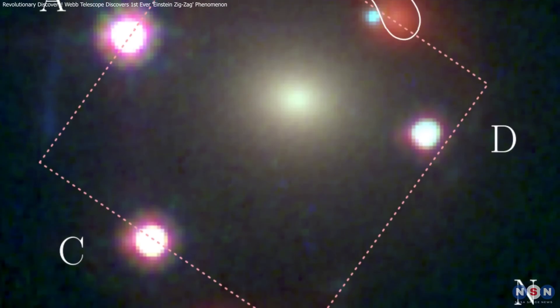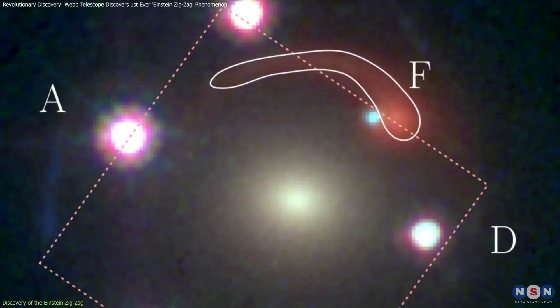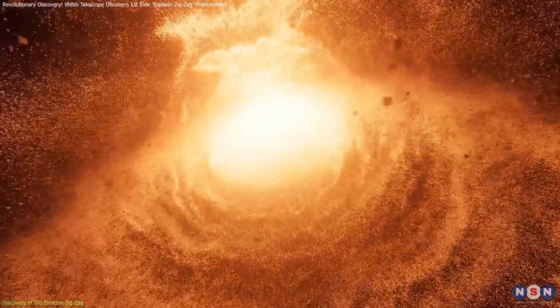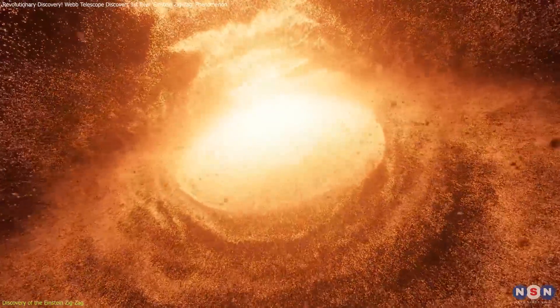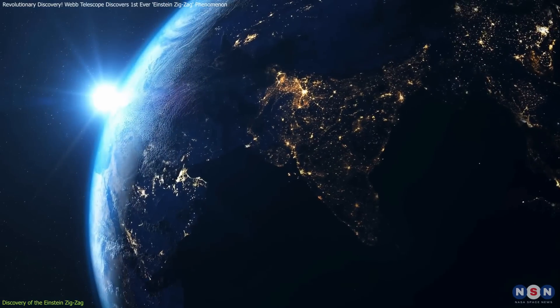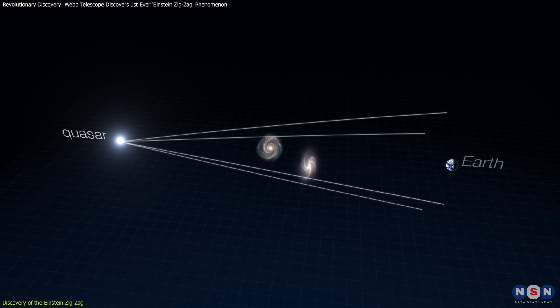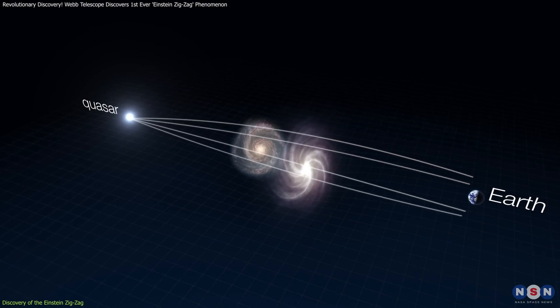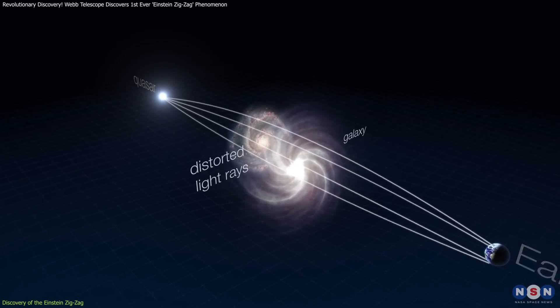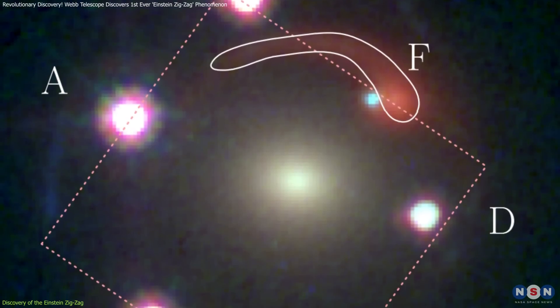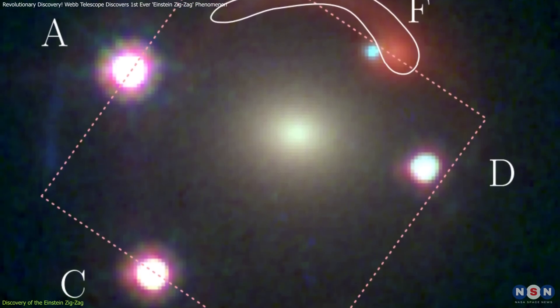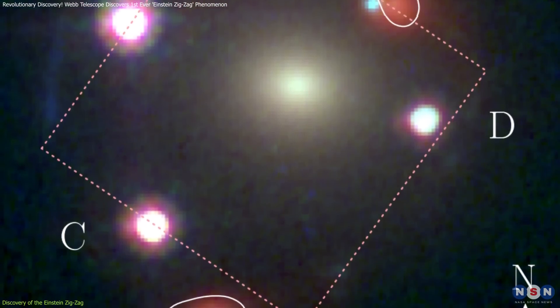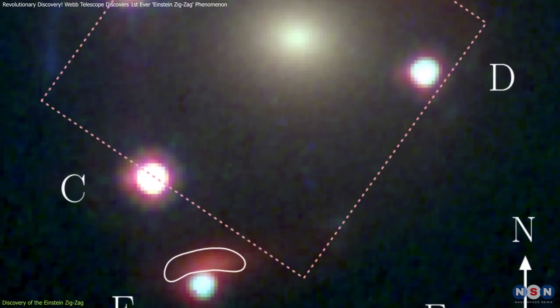The Einstein zigzag involves light from a quasar — a luminous galactic core powered by a supermassive black hole — traveling across 11 billion light-years to Earth. Along its journey, this light is bent and magnified by the gravitational influence of two galaxies positioned perfectly along its path. This rare alignment caused the quasar to appear six times in a single image, forming a zigzag pattern that has never been observed before.